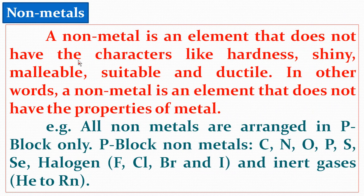The next topic is Non-metals. A non-metal is an element that does not have the characteristics of hardness, shininess, malleability, and ductility. Non-metals include carbon, nitrogen, and oxygen. All non-metals are arranged in the P-block only. The P-block non-metals are: carbon, nitrogen, oxygen, phosphorus, sulfur, and selenium. Also included are halogens — fluorine, chlorine, bromine, and iodine — and inert gases from helium to radon.